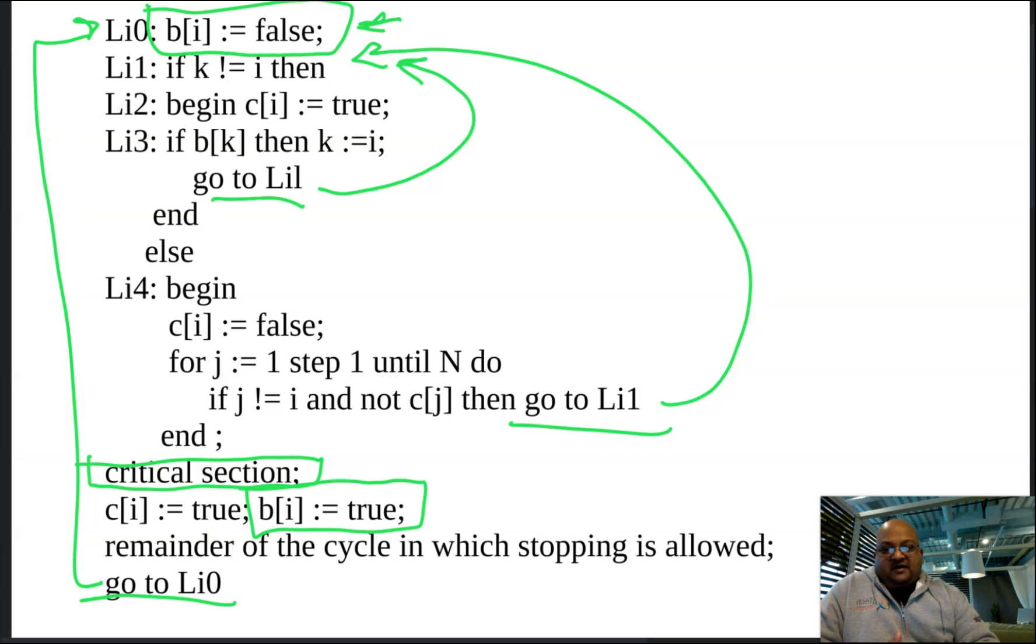So we can see that B of I is kind of a marker for wanting to get into the critical section. Since we know that only the ith process is writing to B of I, we know that B of I is false when we are in the critical section. Now let's look at C.